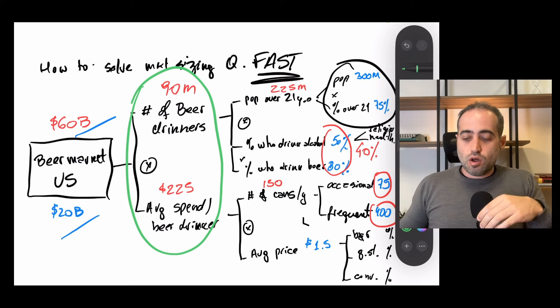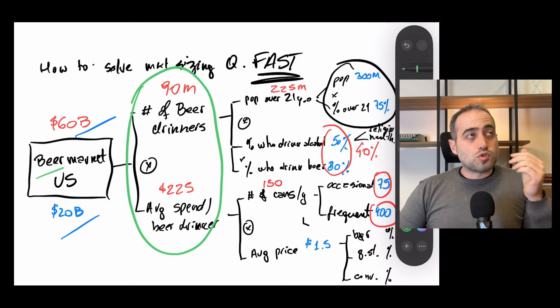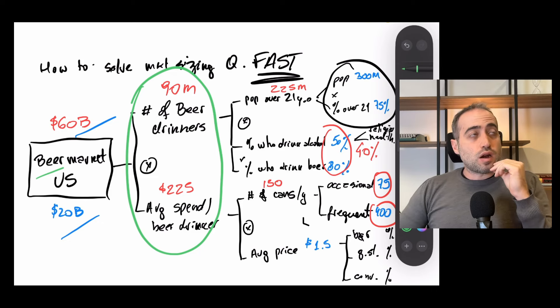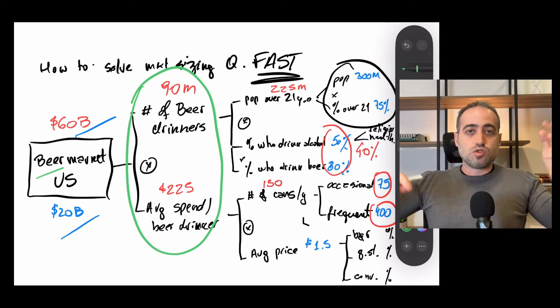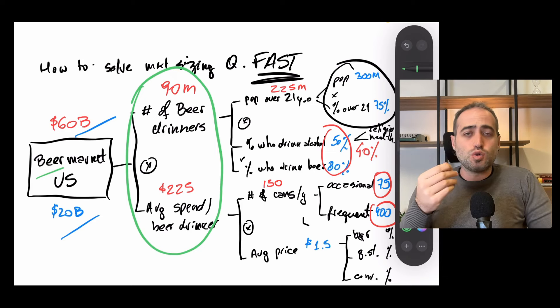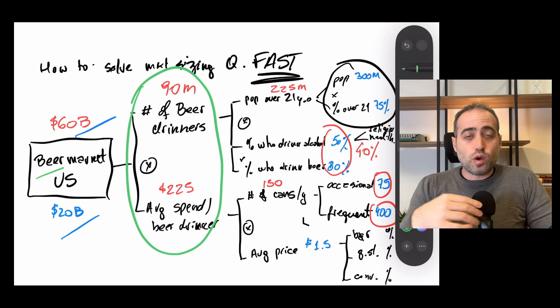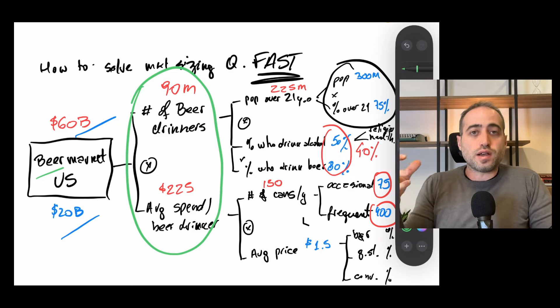Basically, when do you want to take the long approach? It's two situations. First is if the problem is really complex. Beer drinking, that's not a complex problem. But if I'm talking about, for example, the market for surgery scalpels, like I can't just say there are 2 million surgeons in the US. Like I have no idea if it's 2 million or 20 million or 200,000. In that situation, you do need more detail. And the other situation where you need more depth is when you need to be more precise or when you need to show your interviewer that you can do more detailed modeling of a scenario.